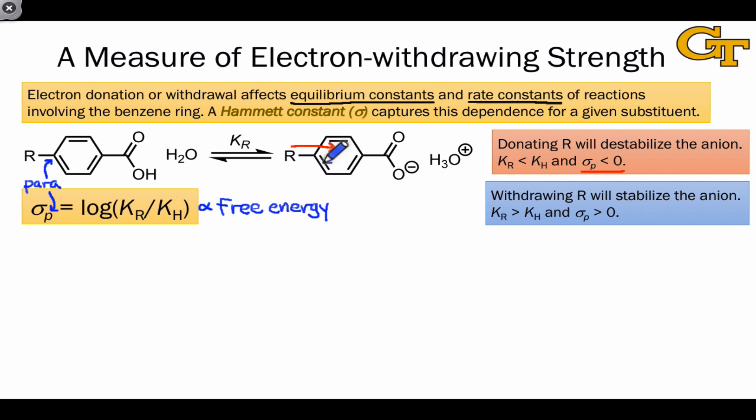Withdrawing R groups, on the other hand, will tend to stabilize the carboxylate anion since they'll introduce more partial positive charge into the ring, which helps with delocalization of the negative charge of the carboxylate anion. This electron-withdrawal effect will tend to push this reaction toward products relative to the case where the substituent is hydrogen, making K sub R greater than K sub H in this case, and the logarithm of K sub R over K sub H, also known as sigma-P, positive.